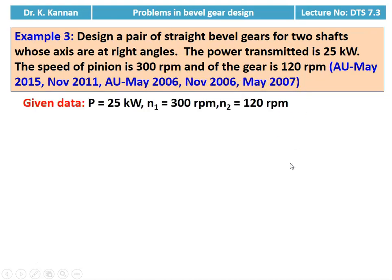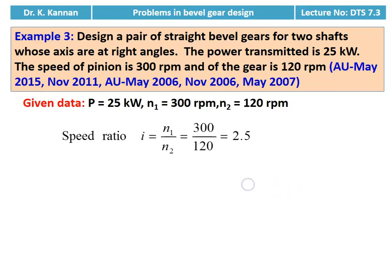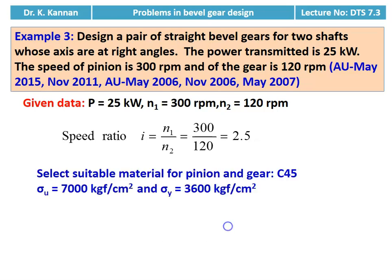We write down the given data: power = 25 kilowatt, pinion speed = 300 rpm, gear speed = 120 rpm. First, we calculate the speed ratio i = N1 / N2 = 300 / 120 = 2.5.